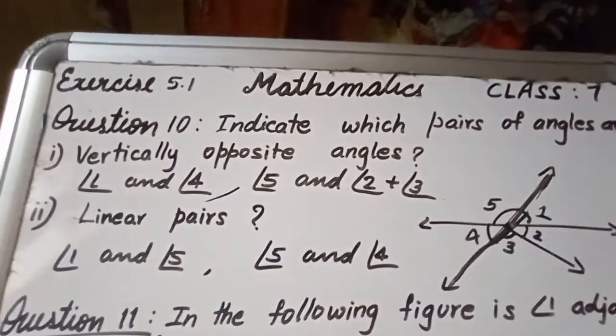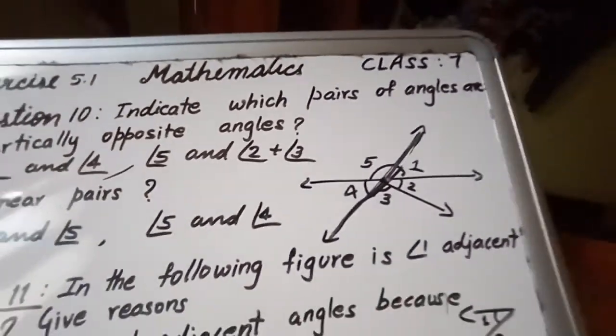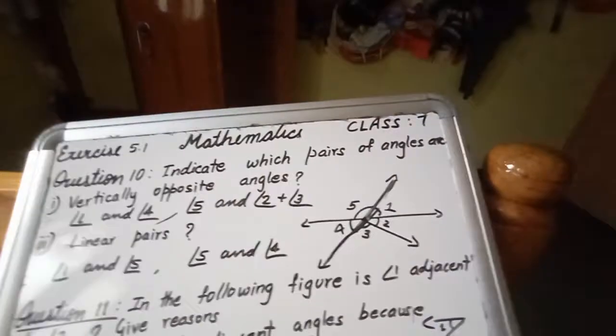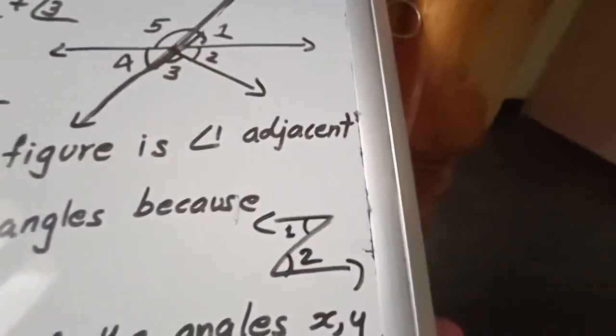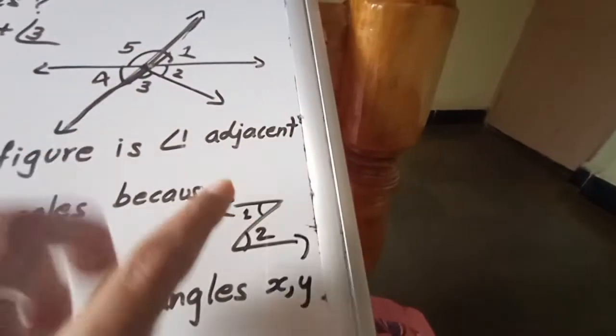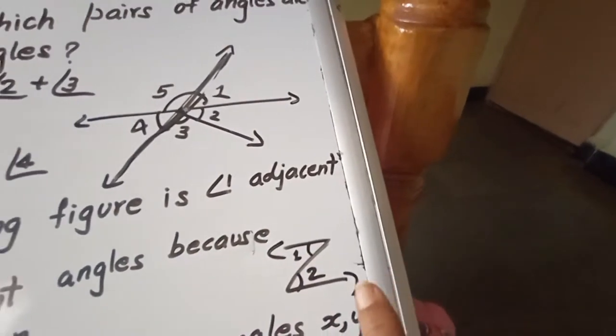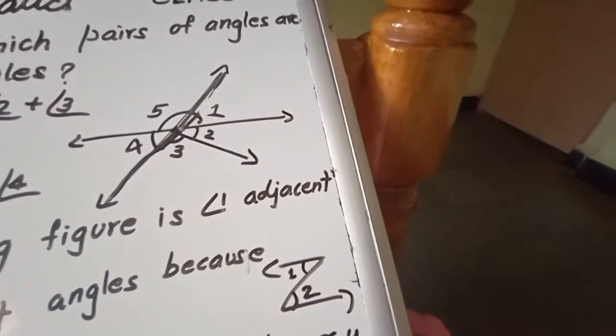Now let us go to question number 11. In the following figure, is 1 adjacent to 2? Give reason. See, 1 is here, 2 is here. It is like a Z shape. But is it adjacent?